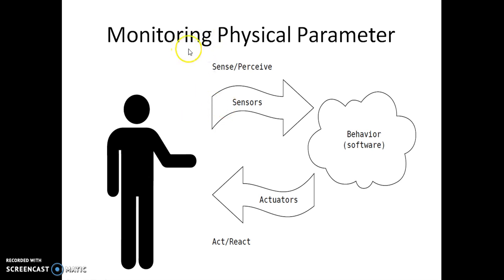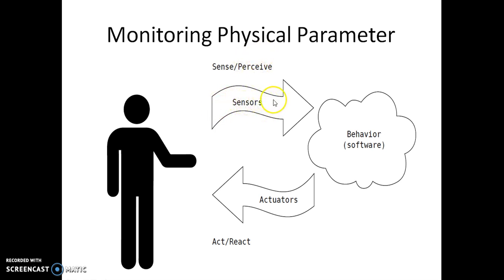Human beings want to monitor many physical parameters. This is the basic structure of monitoring any physical parameter. Since physical parameters do not have electrical signals, we need to use sensors which will convert the physical parameter to electrical signals. That will be fed to a behavior software, which is actually using hardware to find out the action to be taken on monitoring the physical parameter.